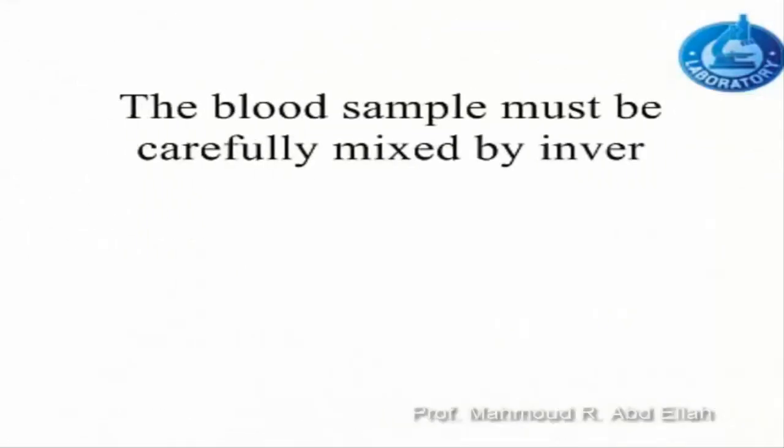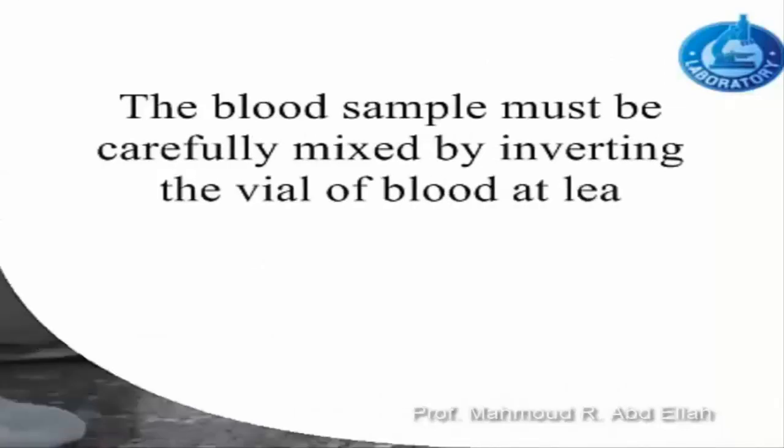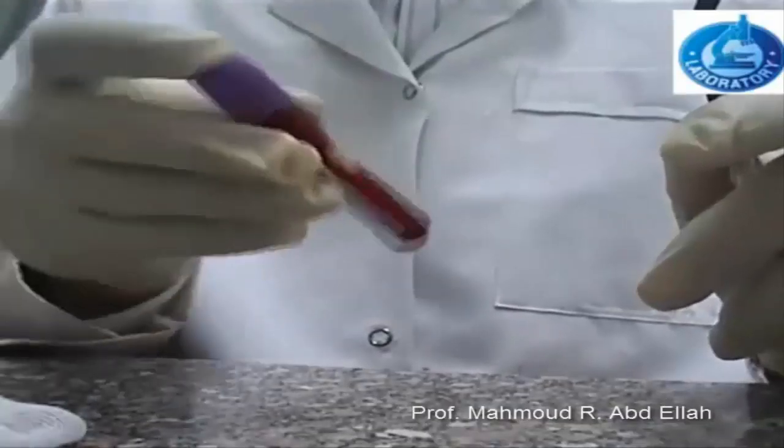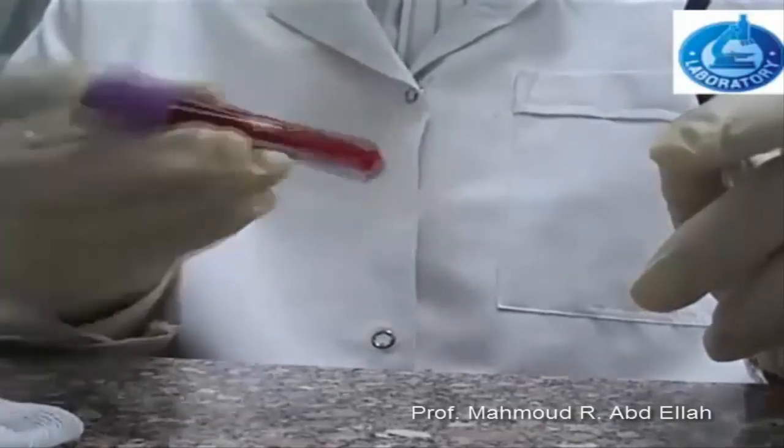Steps for counting white blood cells using the hemocytometer: Mix the blood sample gently.